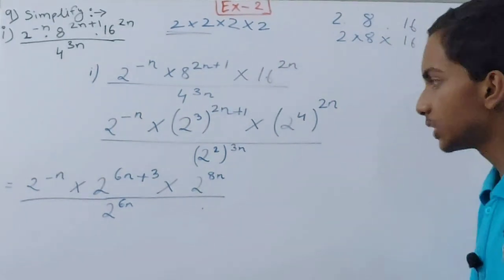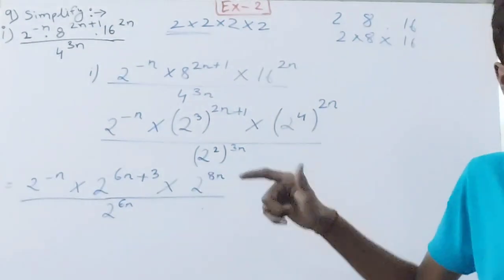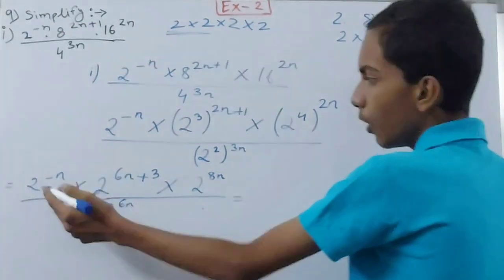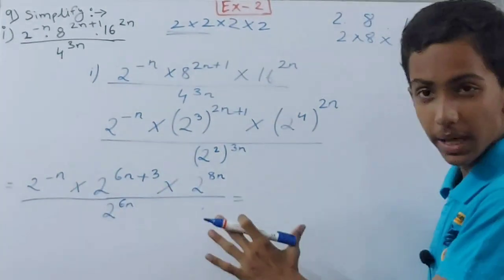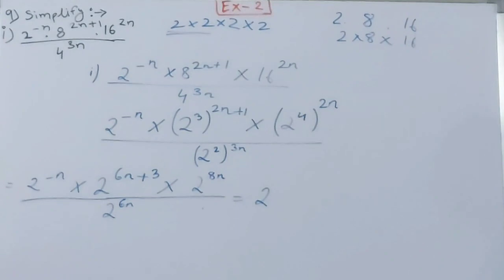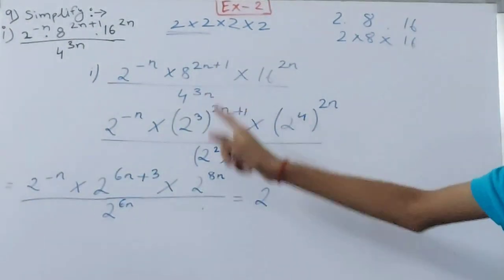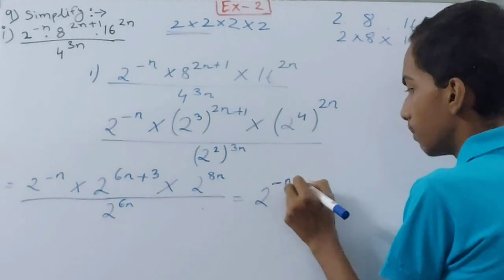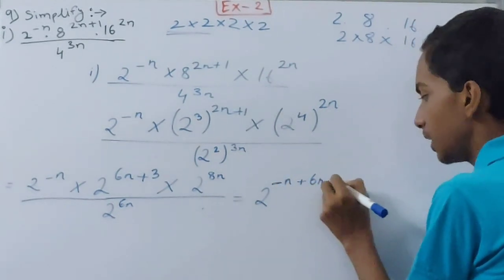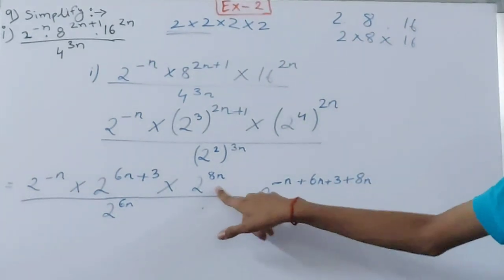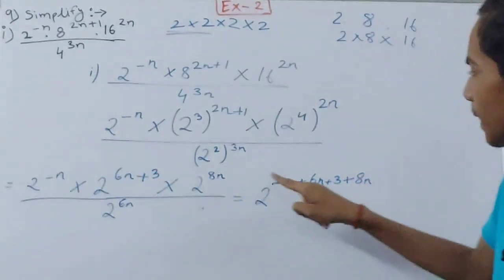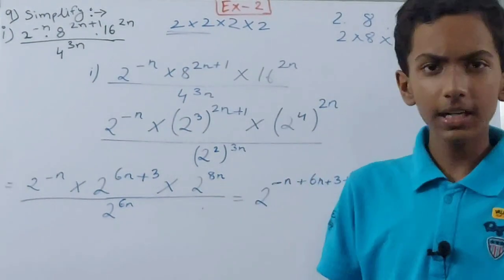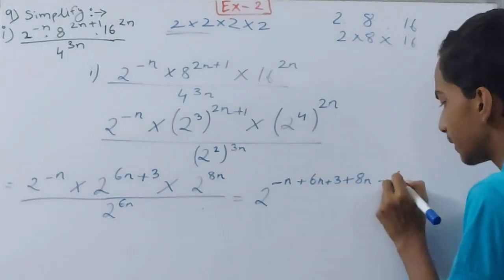All terms now have base 2. In the numerator we are multiplying, so we add all the powers: minus n + (6n+3) + 8n. In the denominator we have 2^6n, so we subtract that power.